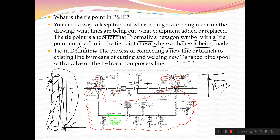Here we have an example of a P&ID where you can see the line is shown hatched — this line is added into our existing project, existing line. So here I will get one tie point, here I will get another tie point, this point also, and this point also. From this point I am getting an assembly connected into this.